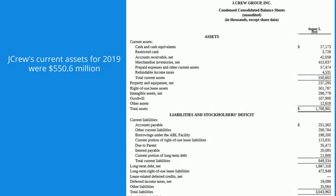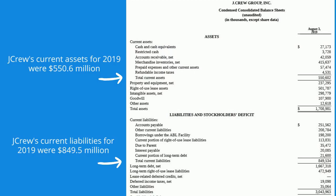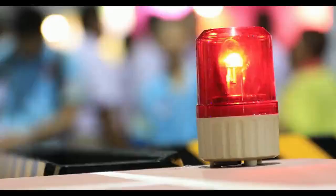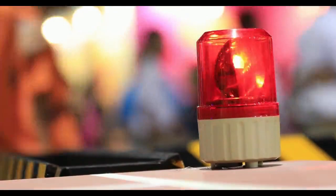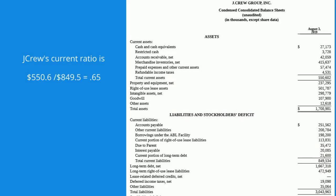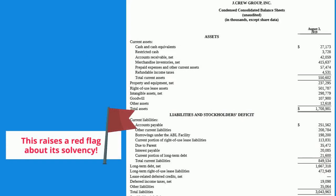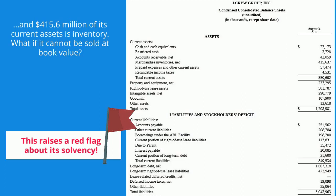Let's look at J.Crew. J.Crew's current assets for 2019 were $550.6 million and current liabilities were $849.5 million, giving a current ratio of 0.65 — raising a red flag about solvency. To make matters worse, $415.6 million of its current assets is inventory. If that inventory cannot be sold at book value, J.Crew's quick ratio is only 0.16.